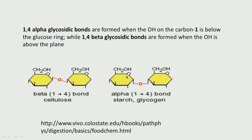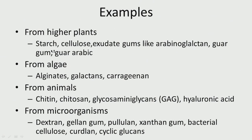Now you know how to name these linkages. From plants we have starch, cellulose, and gums like arabinogalactan, guar gum, and gum arabic. From algae we have alginates, galactans, and carrageenan. From animals we have chitin, chitosan, glucosamine, glycans, and hyaluronic acid. From microorganisms we have dextran, gellan gum, pullulan, xanthan gum, bacterial cellulose, curdlan, cyclic glucan, linear glucan, and so on.